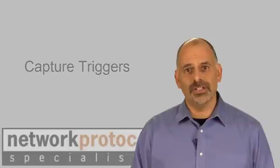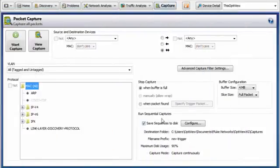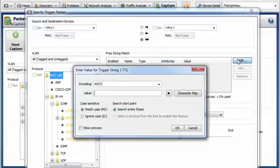With the trigger feature on the OptiView XG, we can set up a pattern that will cause the analyzer to stop and save the capture buffer. Even better, we can set this trigger to put the trigger packet in the center of the capture buffer.